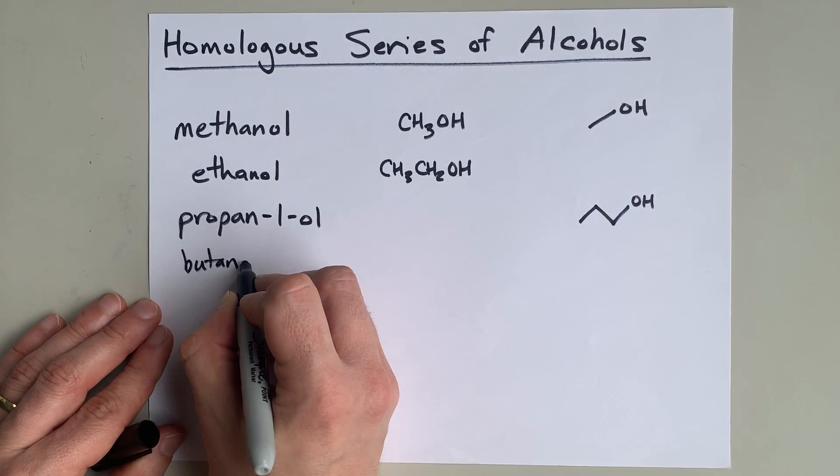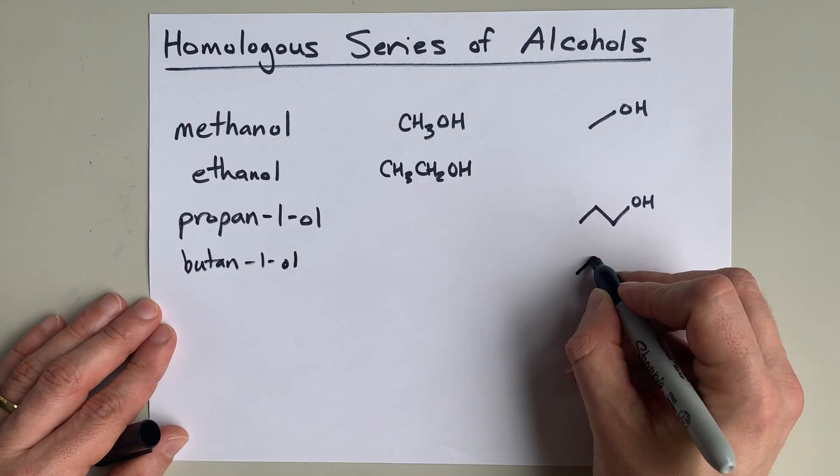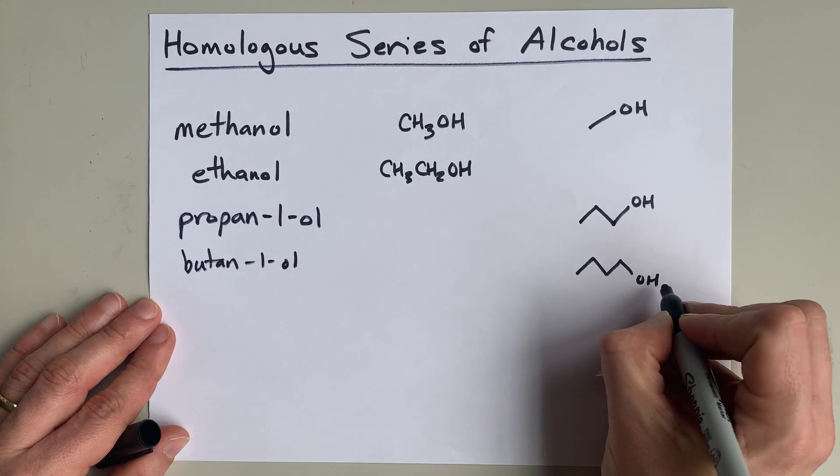Then you'll have butan-1-ol: one, two, three, four carbons with an OH at the end.